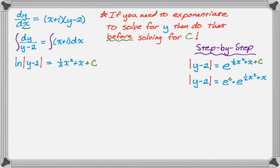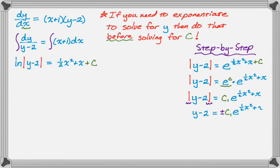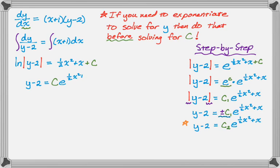Since e to the C is just an unknown constant, call it C₁. Then dealing with the absolute value, y − 2 equals ±C₁ e to the (1/2 x squared + x), and ±C₁ is just another constant C₂. In practice, you can jump straight from the natural log step to: y − 2 = C e to the (1/2 x squared + x). That shortcut works every time and I recommend always using it.